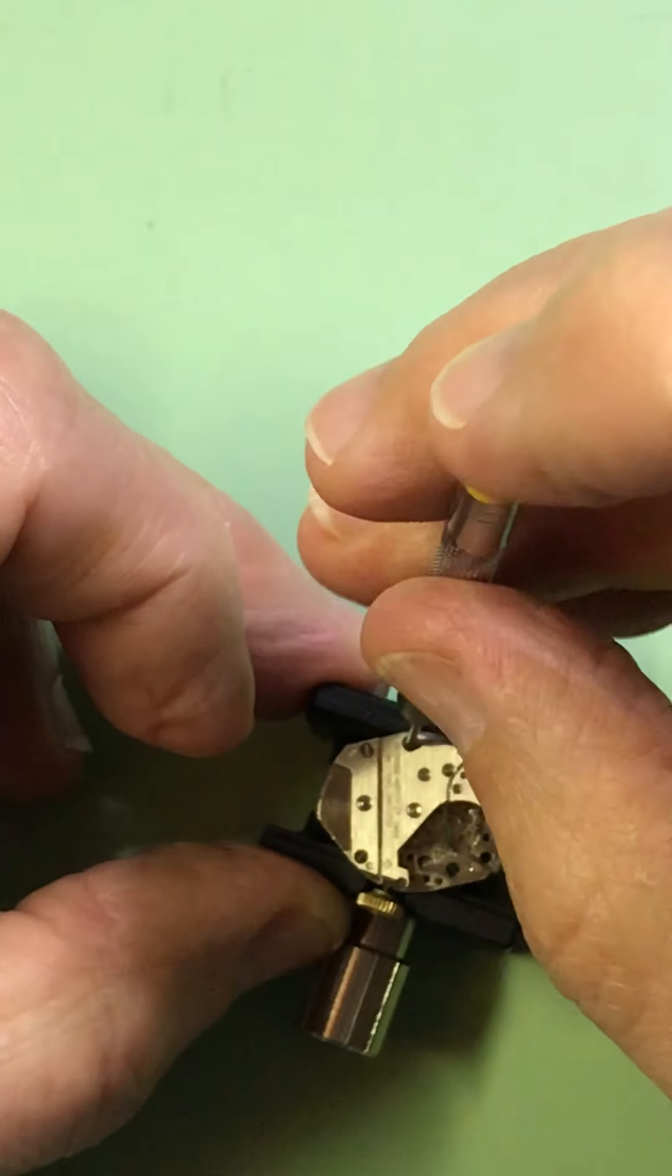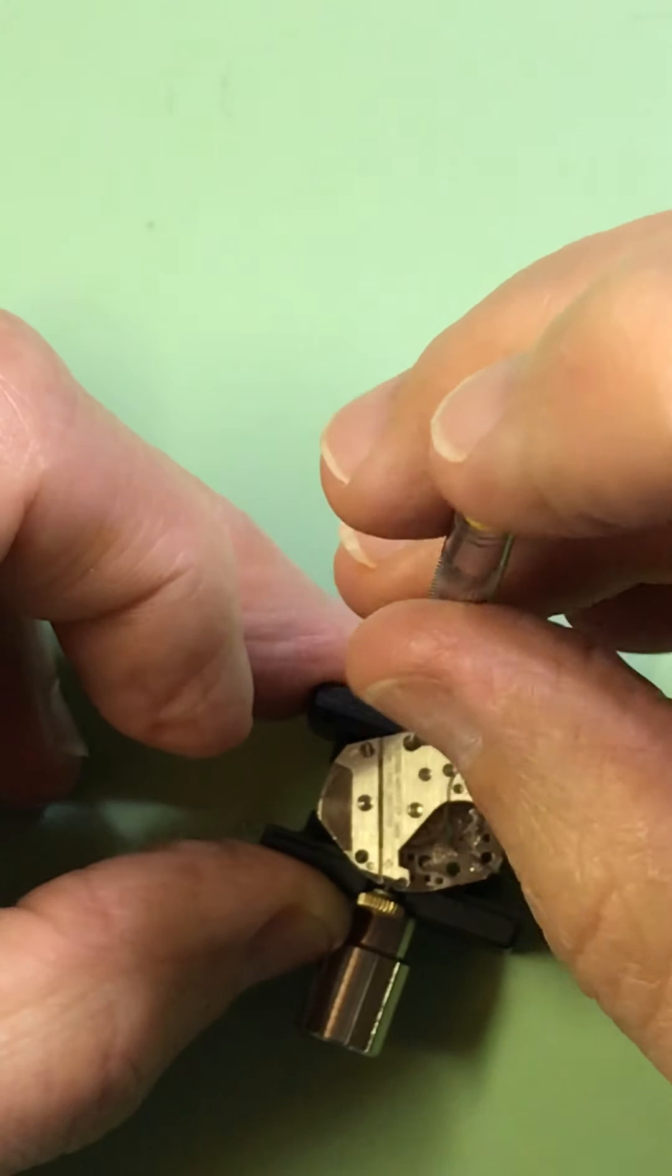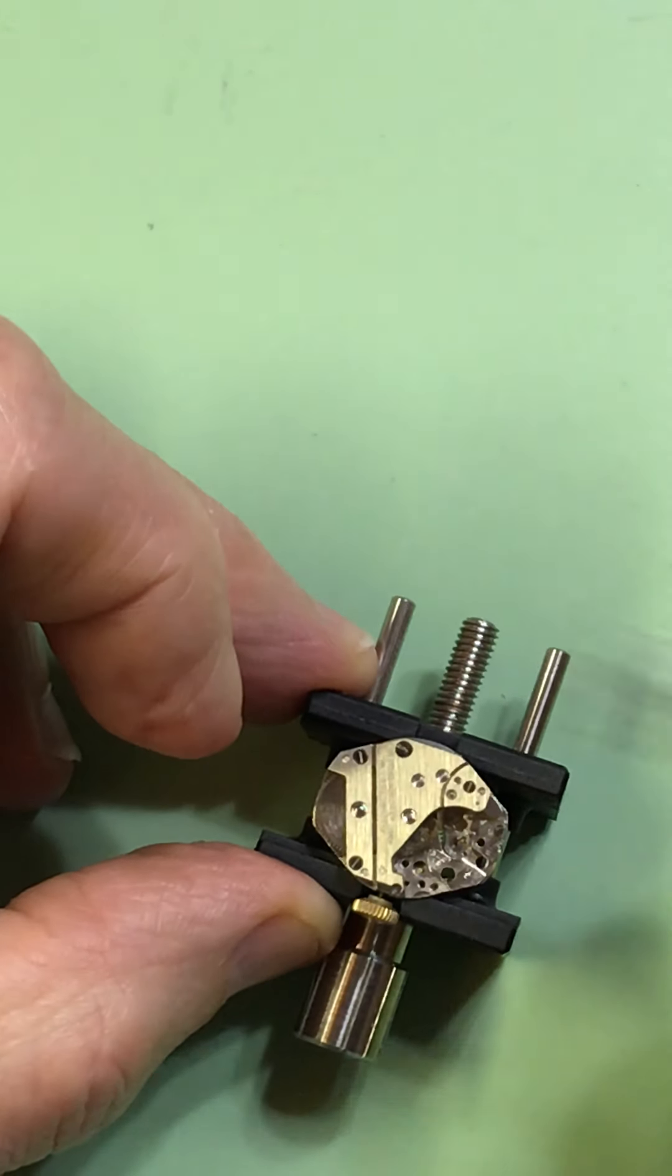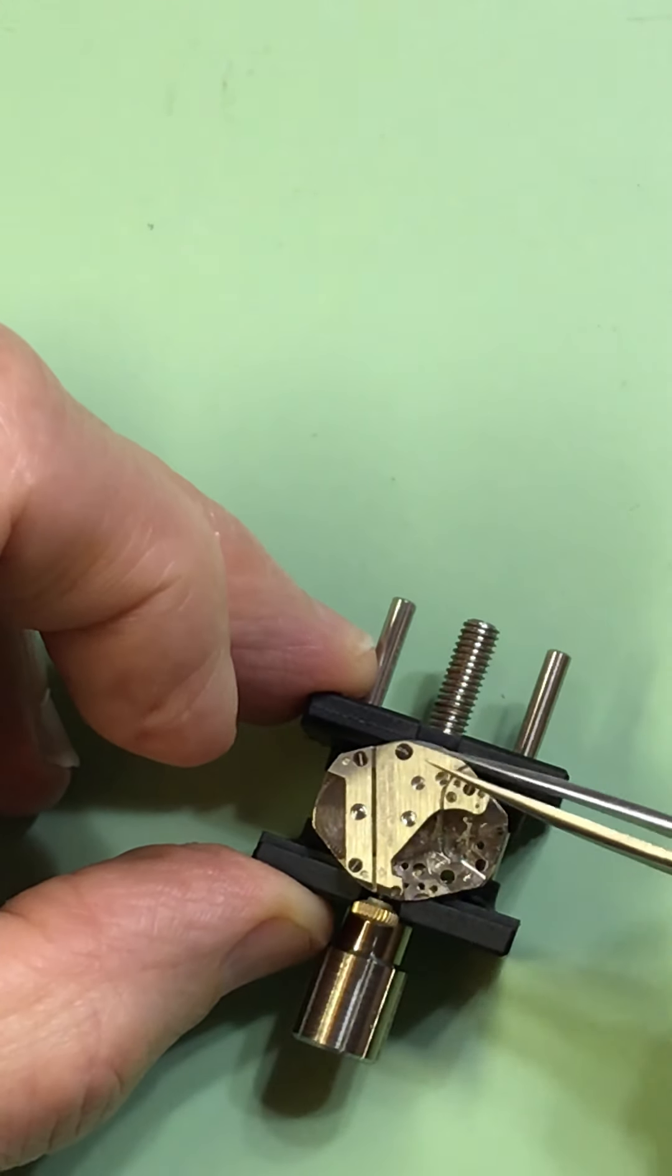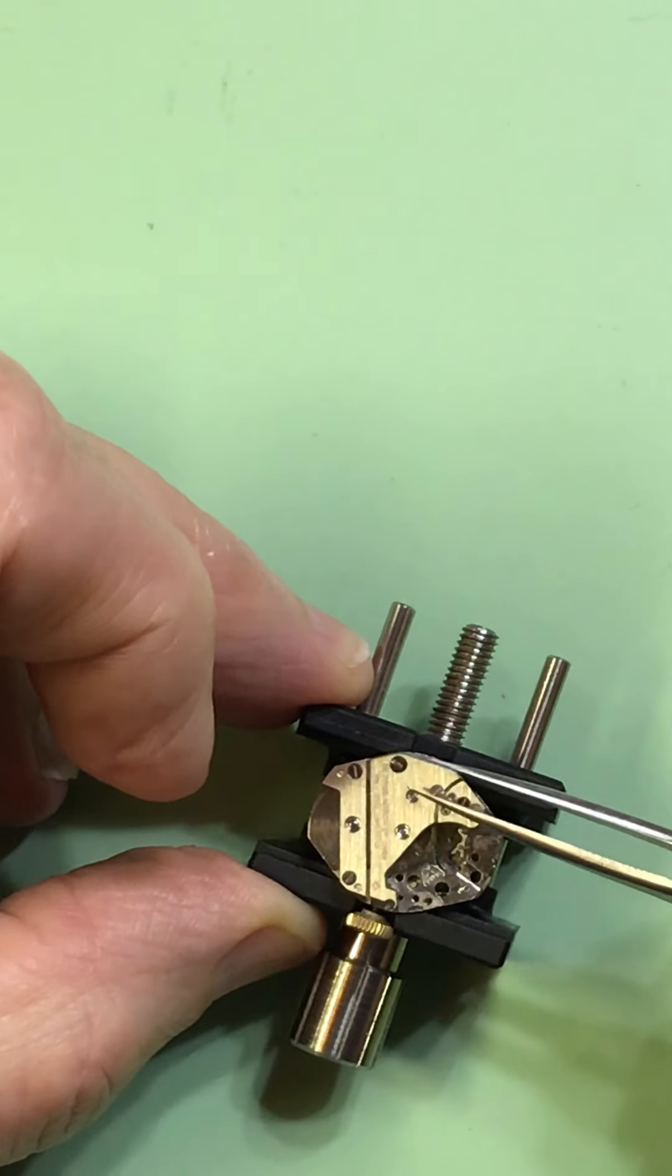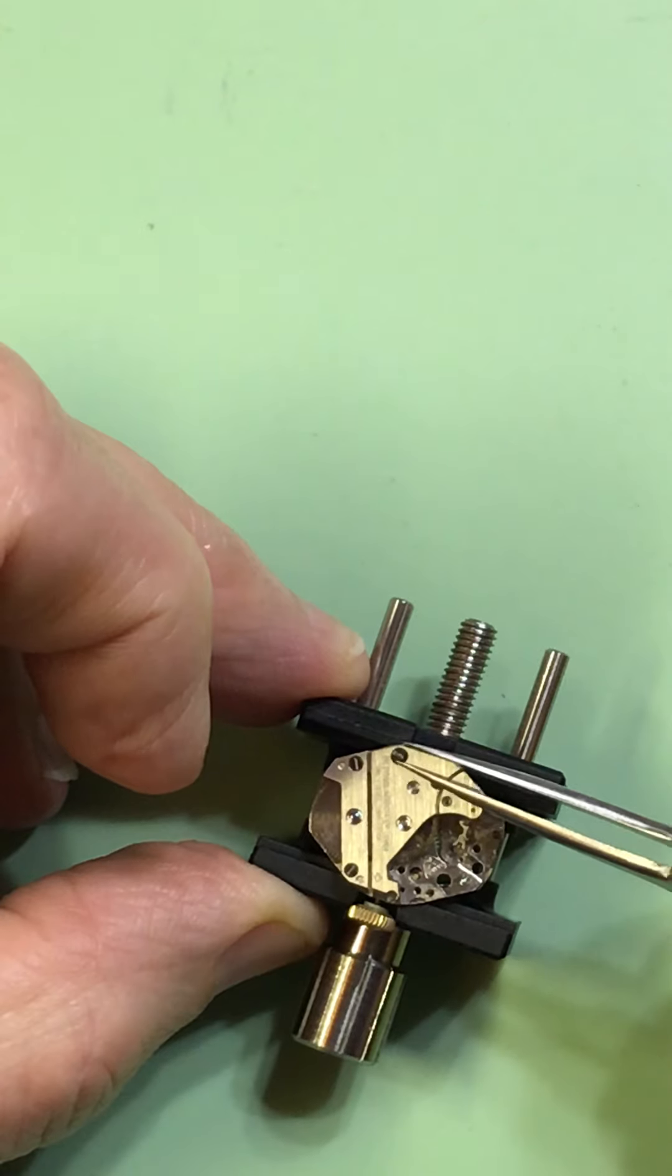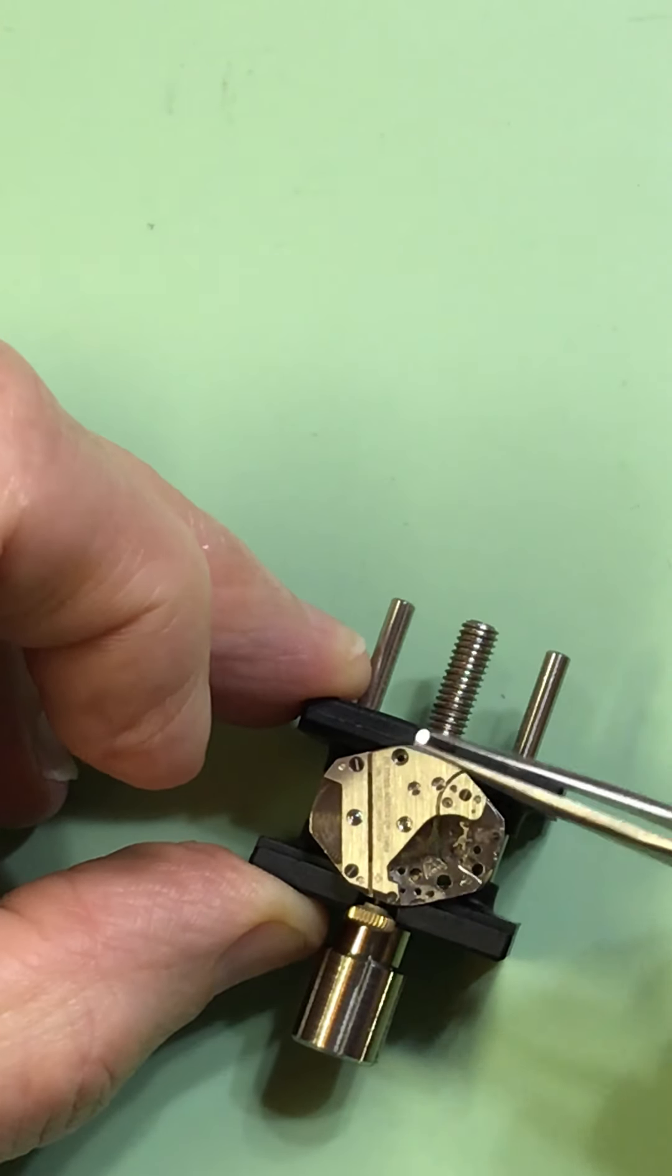Now these are different size screws, so this screw from the nine o'clock hour of the watch, just above the letter M on Madonna, I'm going to remove first.